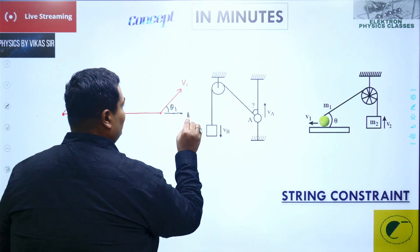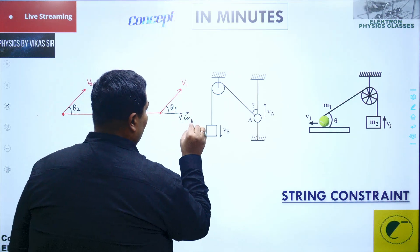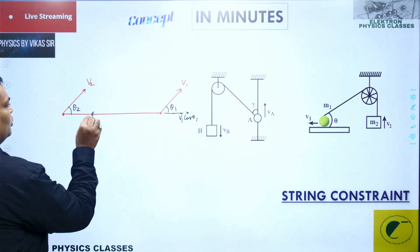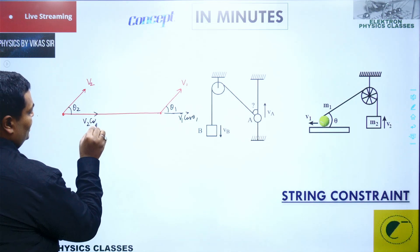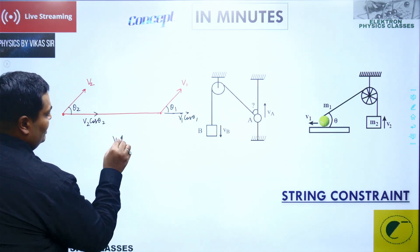the component of the velocities, which over here is how much? v1 cos theta 1. And the component of the velocity here, what is that? That is v2 cos theta 2, should be same. That is, v1 cos theta 1